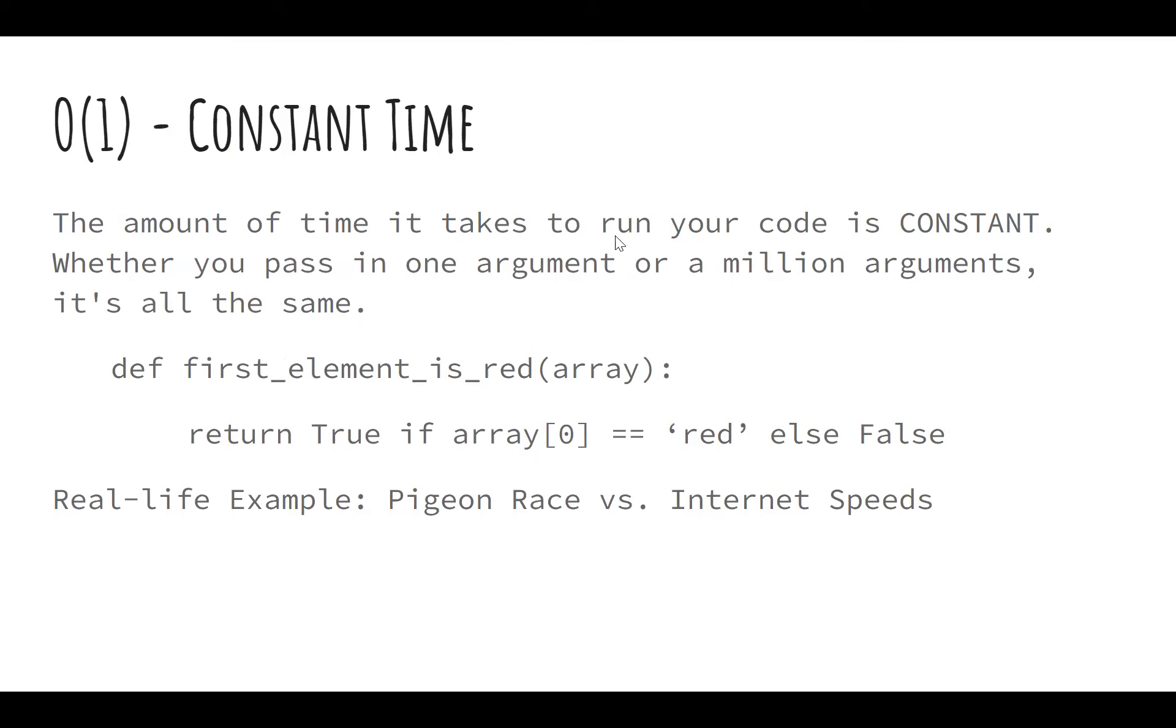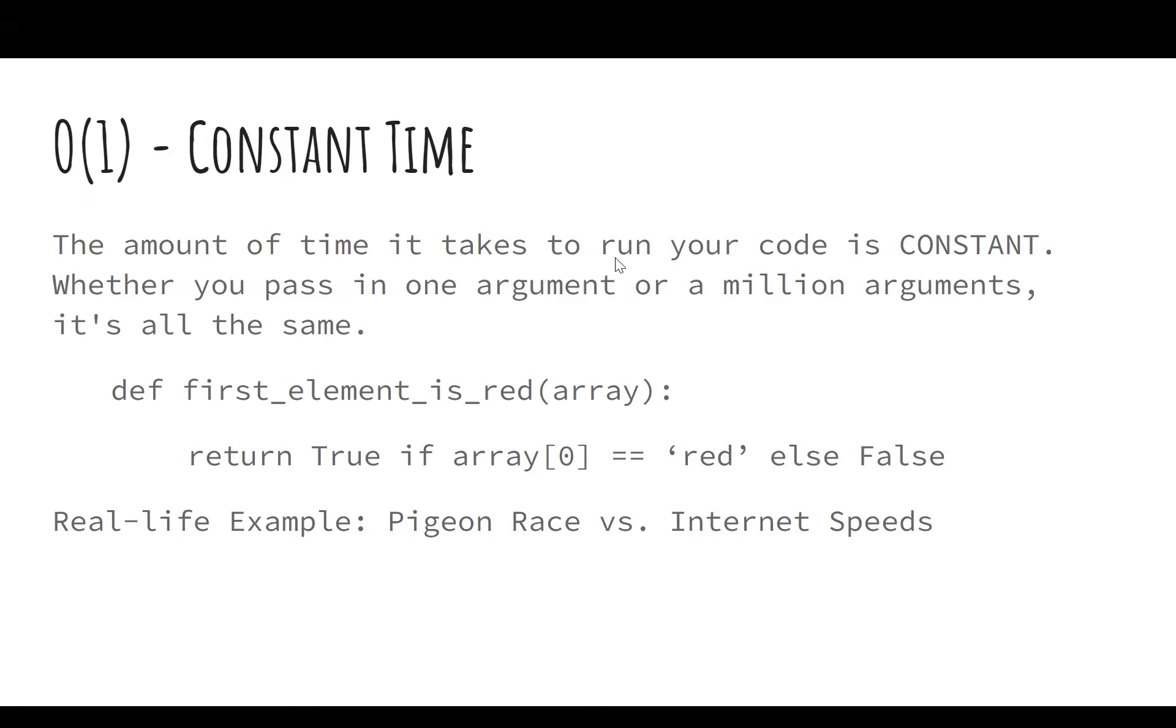So let's see some examples of this in practice. So the ideal, easiest option is O of one, also known as constant time. A simple example of that is checking if the first element of an array is red. Why is this O of one? Well, let's say the array has two elements in it. It only needs to check the first element. So it takes one step to run. What if I have an array with 15 elements? Well, still, it only needs to check the first element. So it has one step. What if it has a thousand? Same thing. One step. The amount of time it takes to check the first element, which is really all you need, doesn't change. It doesn't depend on how big the array is. So that's why this is a constant time function.